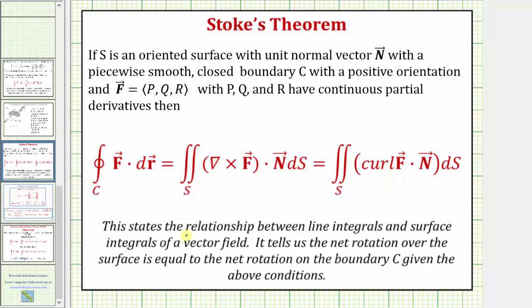This states the relationship between line integrals and surface integrals of a vector field. It tells us the net rotation over the surface s is equal to the net rotation on the boundary c, given the above conditions.